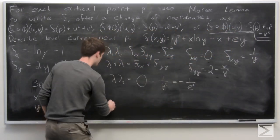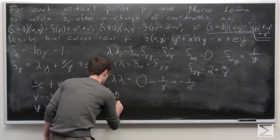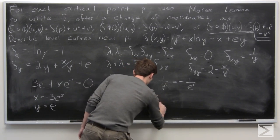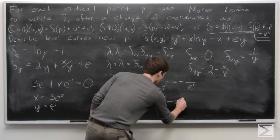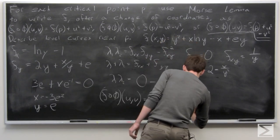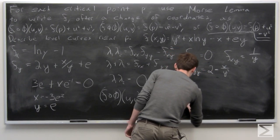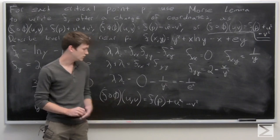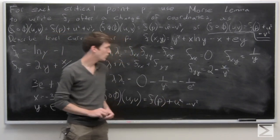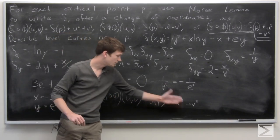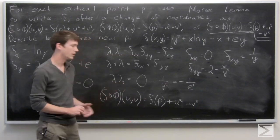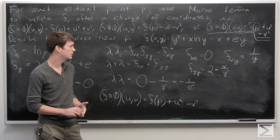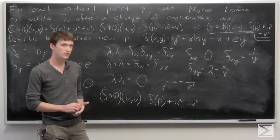Since Morse Lemma tells us that if lambda 1 and lambda 2 have opposite signs we are in the third case, we can write f composed of phi of u, v equals f of p plus u squared minus v squared, for some change of coordinate. This change of coordinate exists because our lambdas have opposite signs and the determinant of the Hessian is non-zero, so the critical point is non-degenerate.